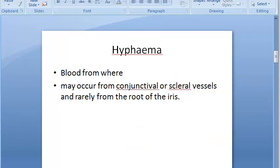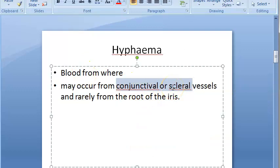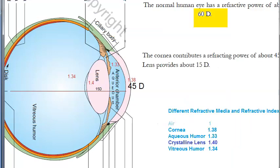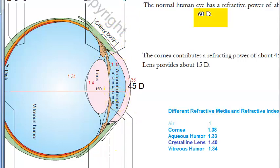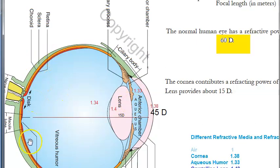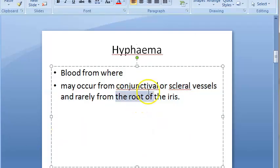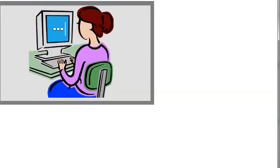Now, from where does the blood come? Usually it can be the conjunctival vessels or the scleral vessels — the green in this diagram represents the sclera. Or from the root of the iris. So blood comes from conjunctival vessels, scleral vessels, or from the iris root. Read more about this from the textbook.